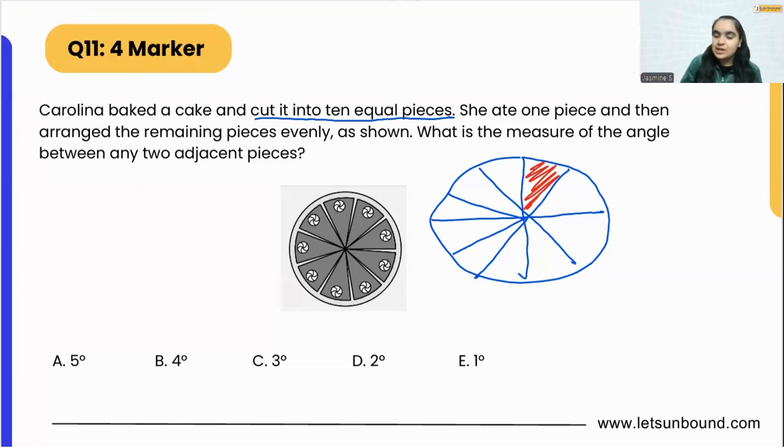Now out of 10 pieces, if she has already eaten one, the remaining pieces will be nine. She arranged these nine pieces evenly. The question asks: what is the measure of the angle between two adjacent pieces? Out of 10 pieces, if we have eaten one piece, that gap will be empty. To cover that, Carolina arranged the pieces in this manner so that between any two adjacent pieces there is a very tiny little gap like this.